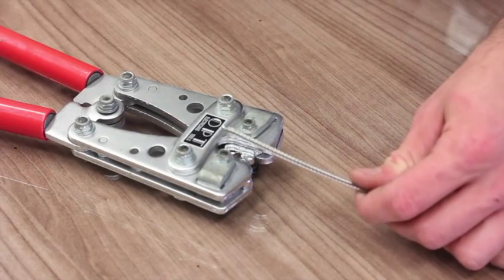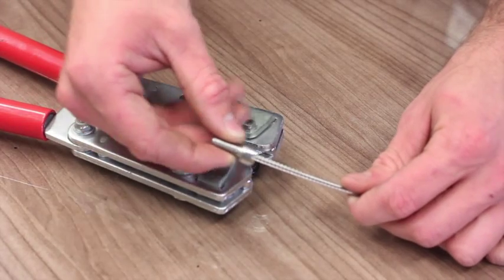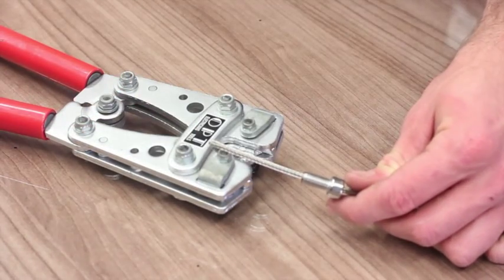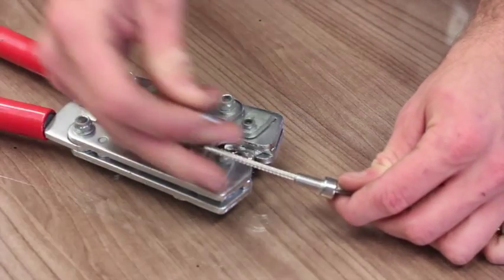Thread the finishing stop and swage terminal into the wire and crimp 4 times using the HX50 swage tool on setting 6.